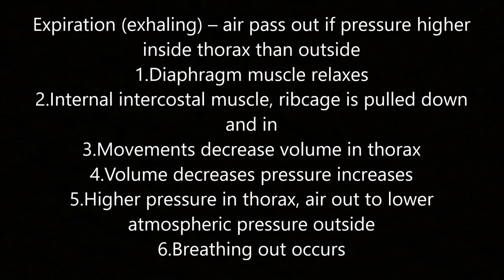Expiration: air passes out when pressure inside the thorax is higher than outside. The diaphragm muscle relaxes and the internal intercostal muscles pull the ribcage down and in. This decreases the volume of the thorax; as volume decreases, pressure increases. The higher pressure in the thorax causes air to move out to the lower atmospheric pressure outside — breathing out occurs.